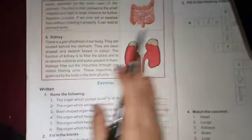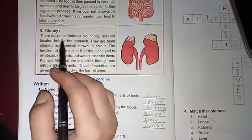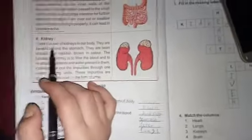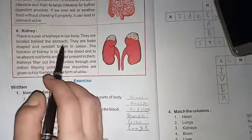Now the second topic is kidney. There is a pair of kidneys in our body. They are located behind the stomach.